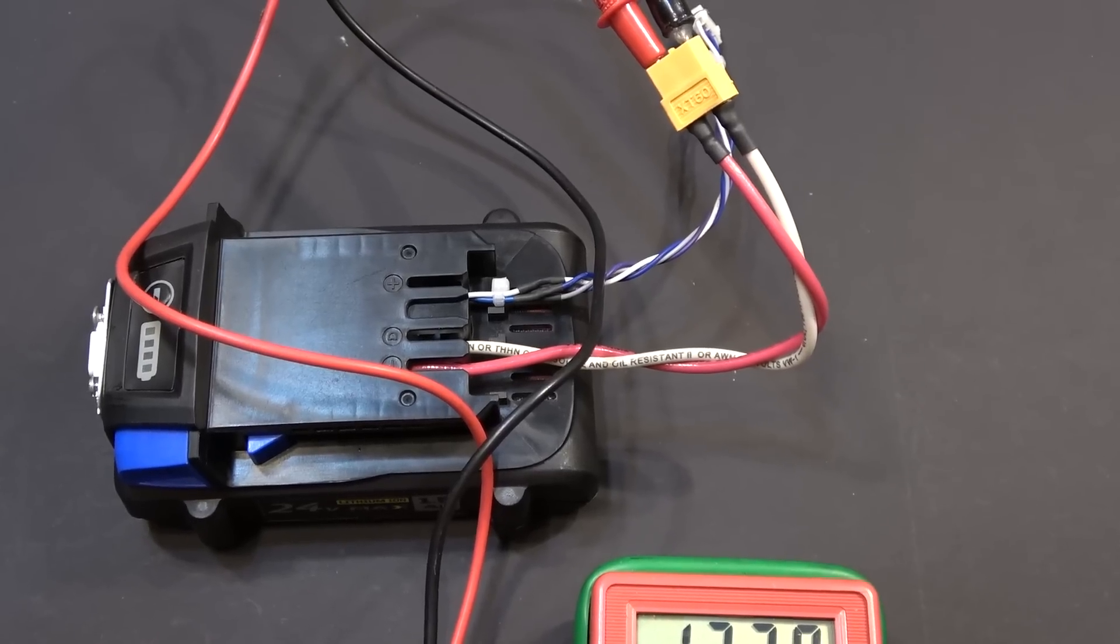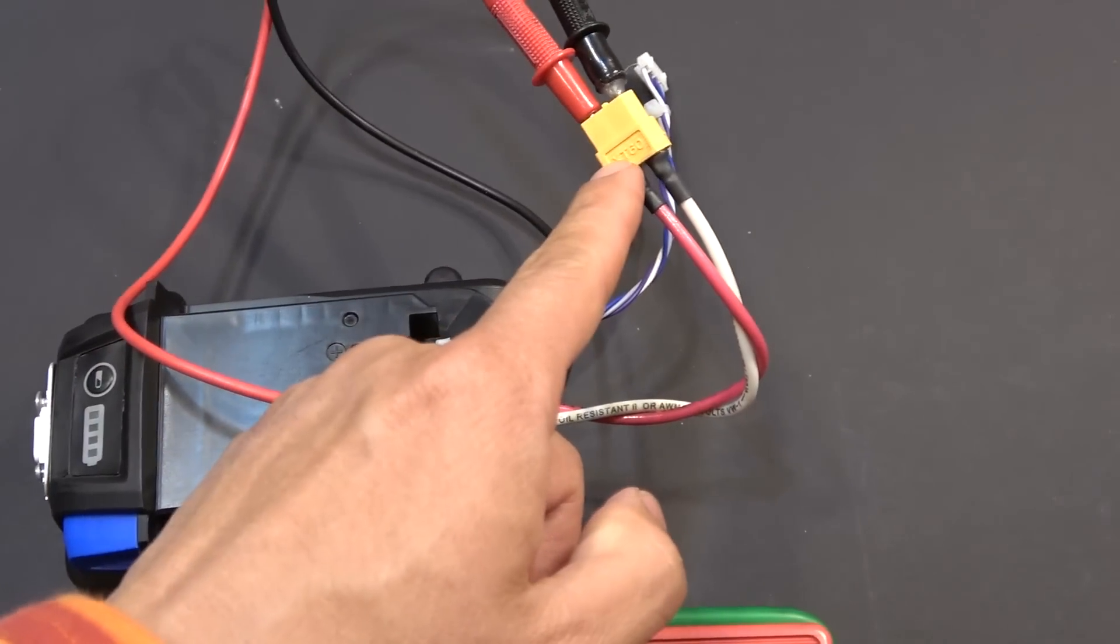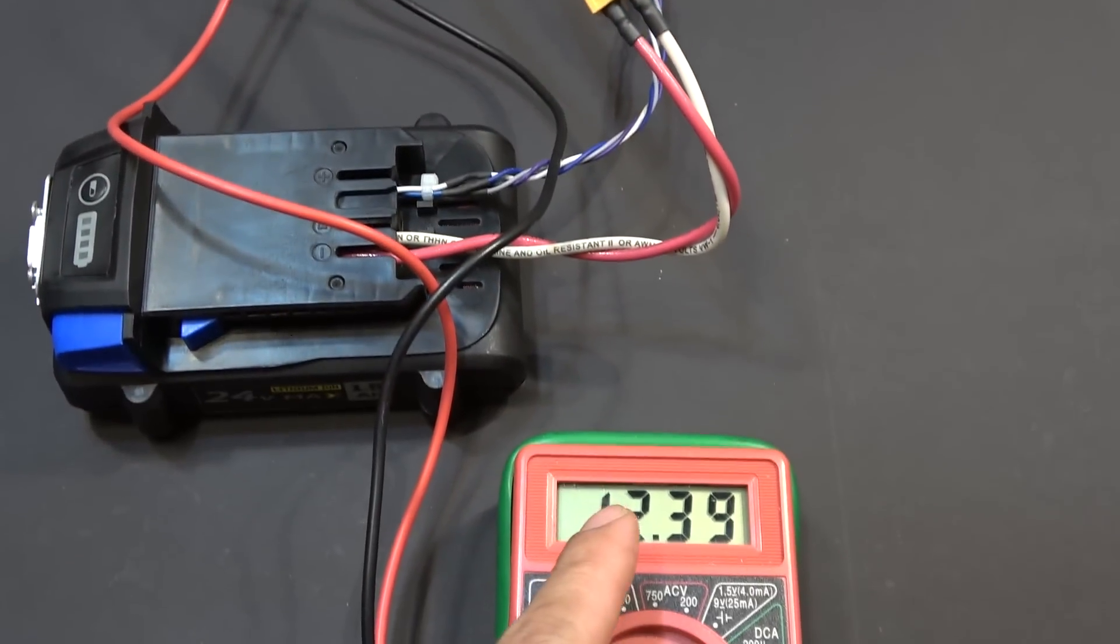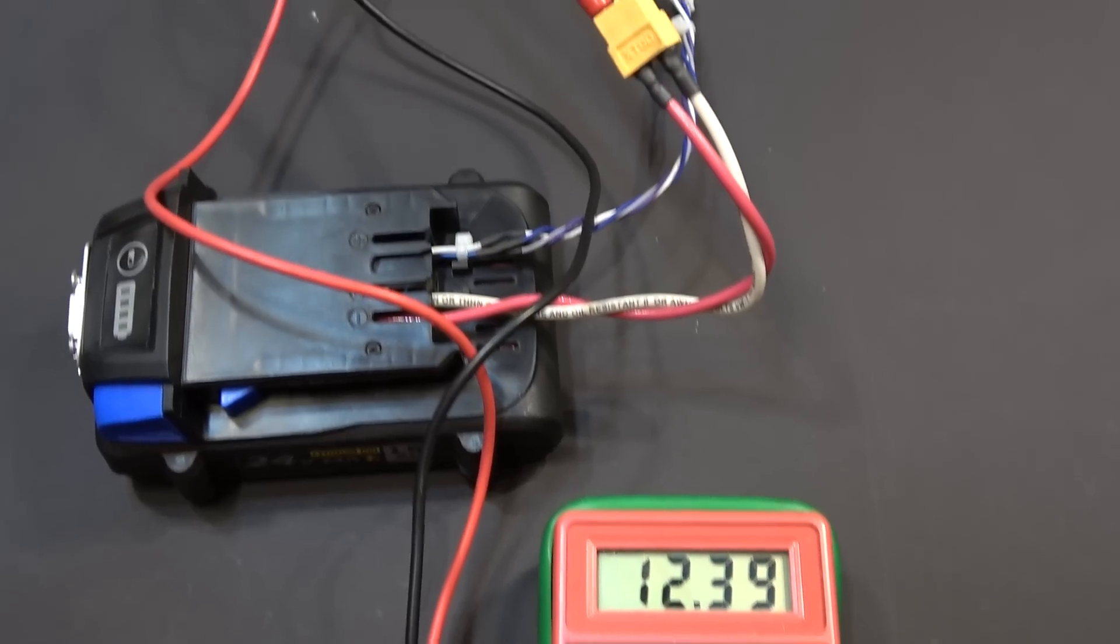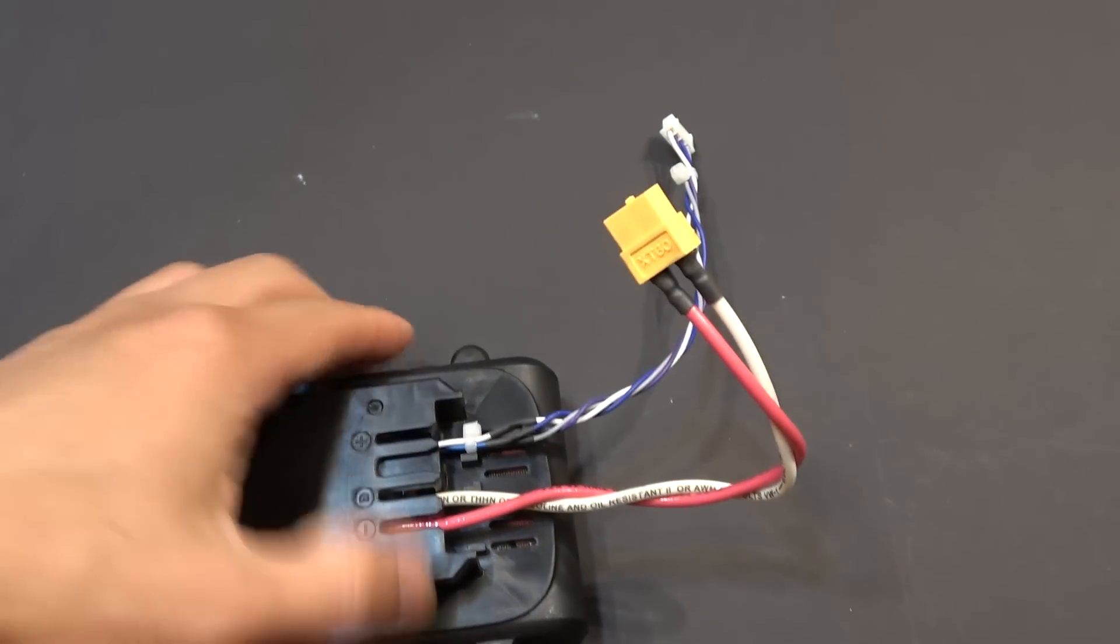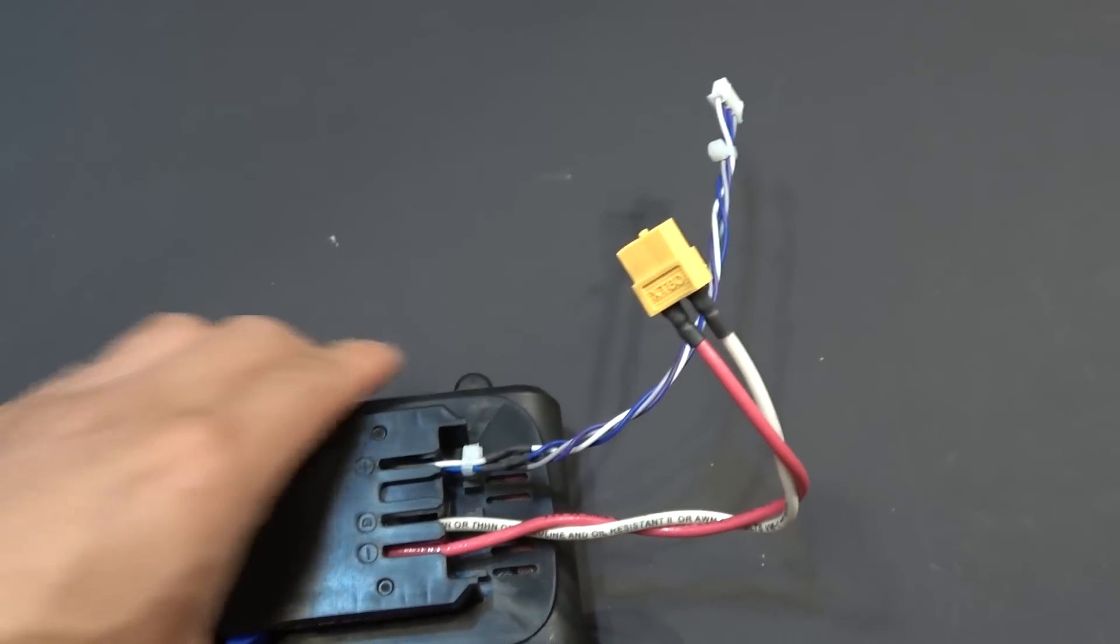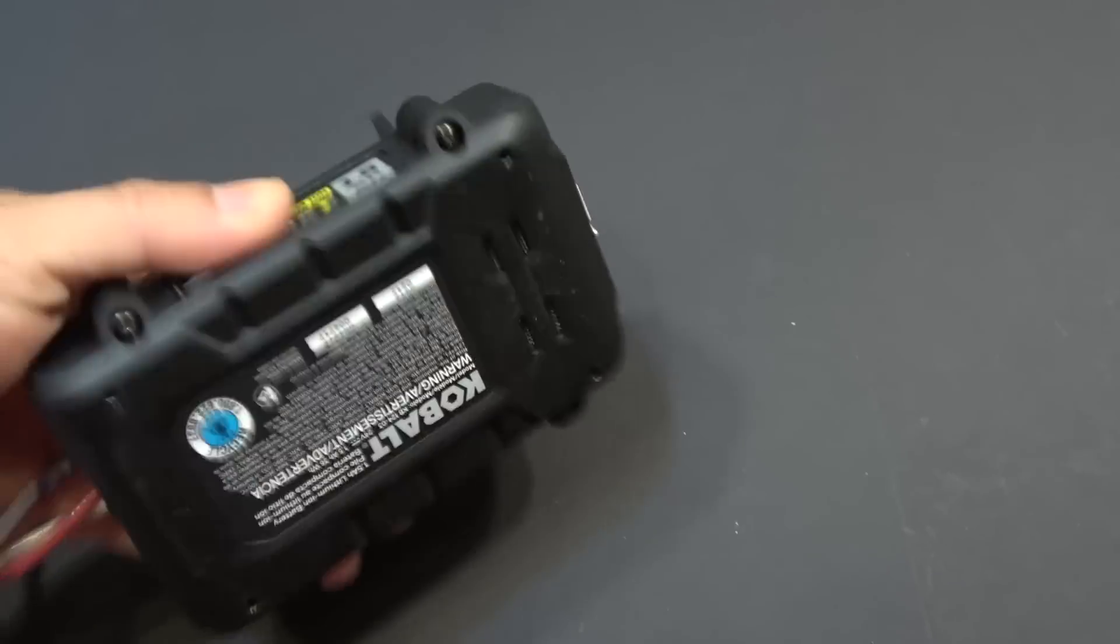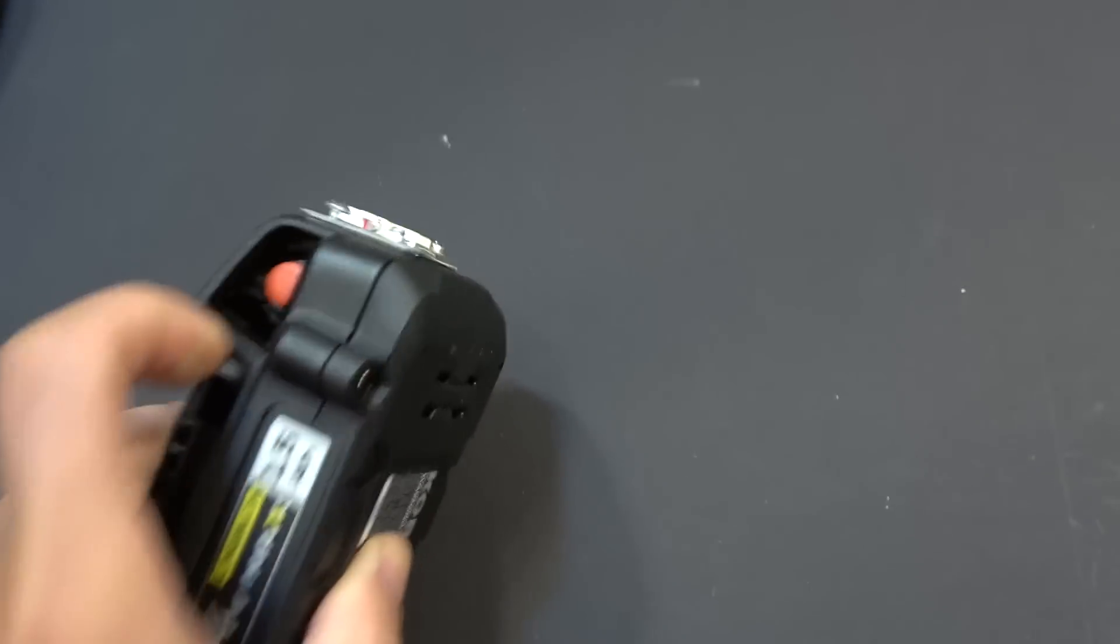Alright, so here is the final product. Got the XT60 connector and the voltage output is 12.39 volts. Also got my balance charging cable. It's all nice and neat inside. That's the switch for the flashlight, and that's the LED.